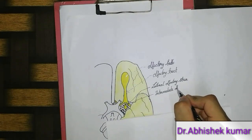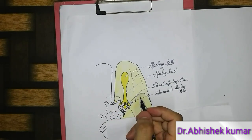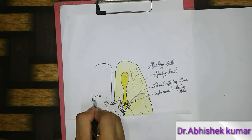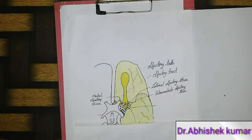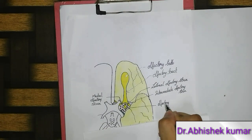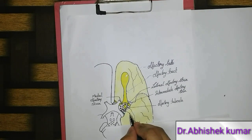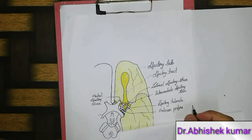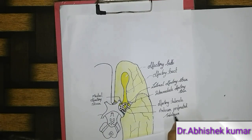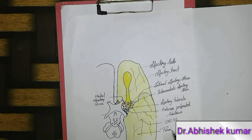This one is the intermediate olfactory stria, and this one is the medial olfactory stria. This round structure in color is the olfactory tubercle. This dotted structure here is called the anterior perforated substance. In the anterior part, the uncus and parahippocampal gyrus are present.